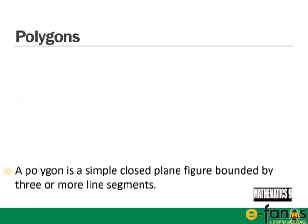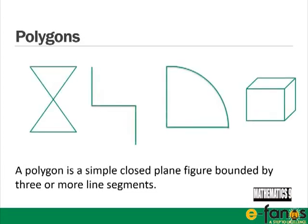A polygon is a simple closed plane figure bounded by three or more line segments. This first shape is not simple because it has two lines crossing over each other, so it's not a polygon.